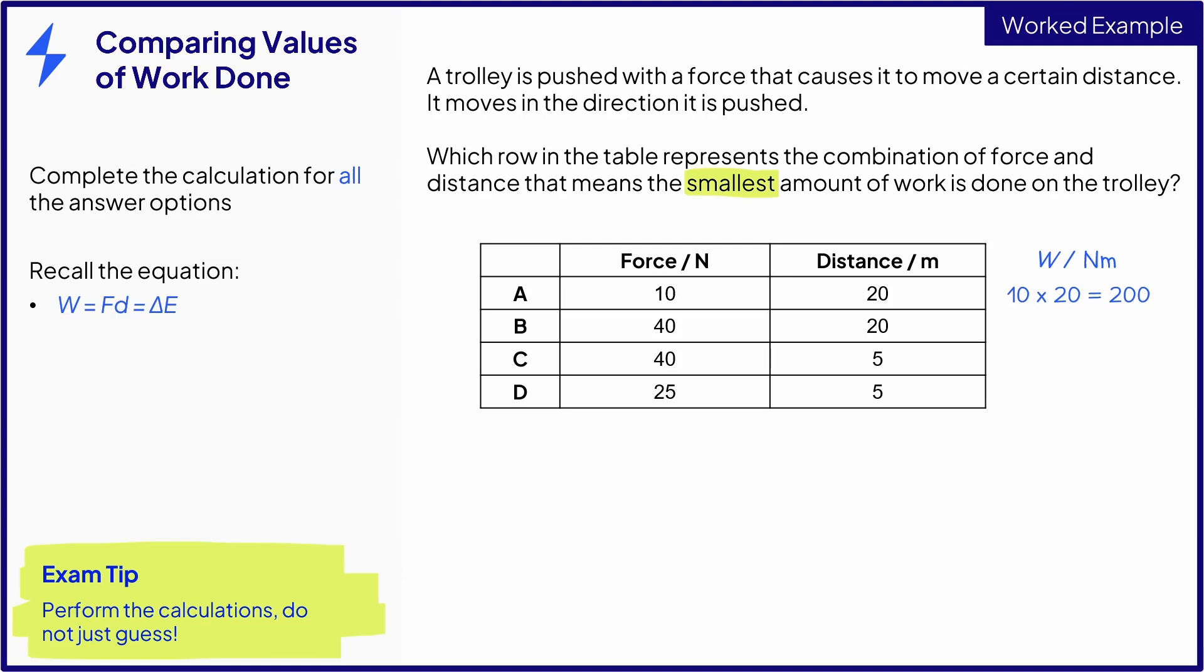For option B, the work done is 40 times 20, which is 800 newton meters or joules. For option C, the work done is 40 times 5, which is 200 newton meters or joules.